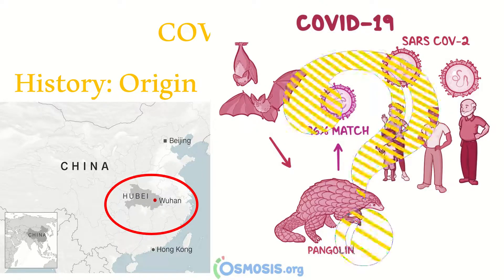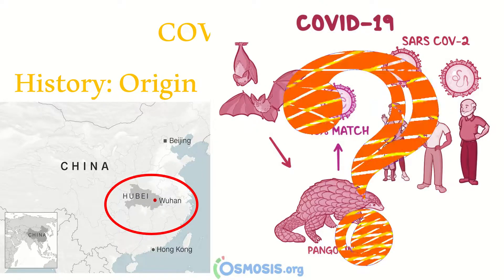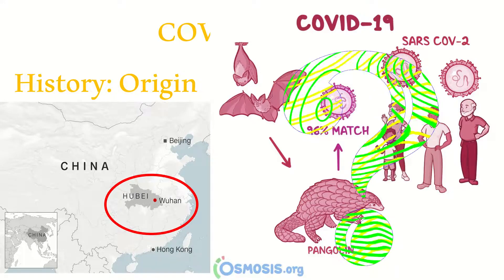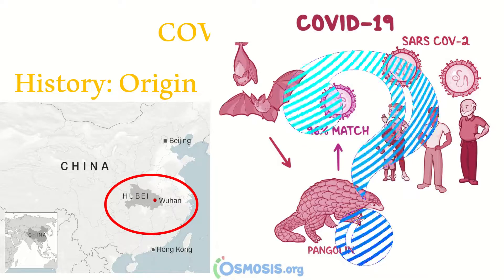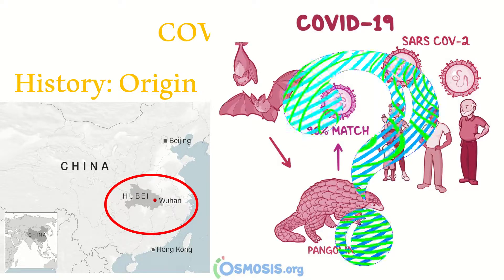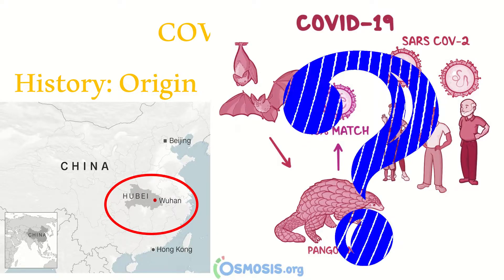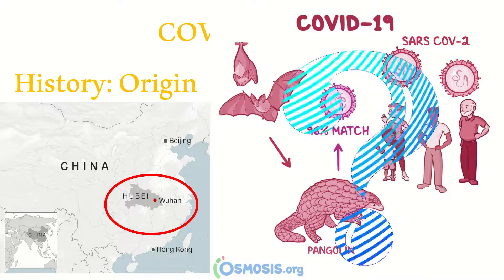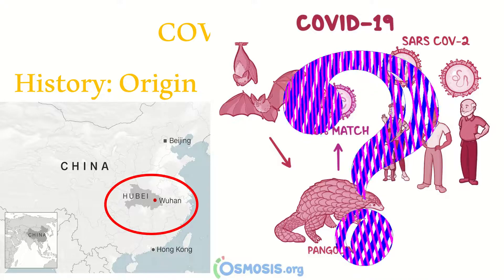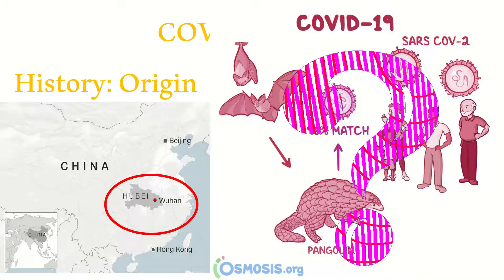The coronavirus spread from China to other countries through international travel. Now let's see how each country got infected through a chart.